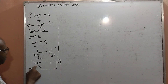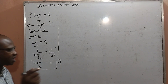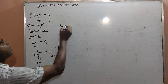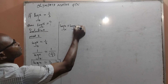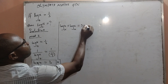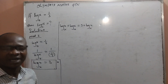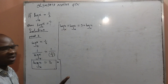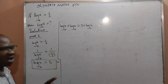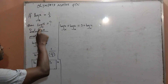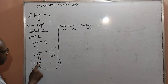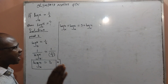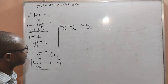Moving forward, what I will do next is to add log 4 base x to both sides. The reason is because I am interested in getting log 16 base x, so I am looking for a way to make log 16 base x. That is why I have added log 4 base x to both sides — because it is added to both sides, the equation is still balanced.